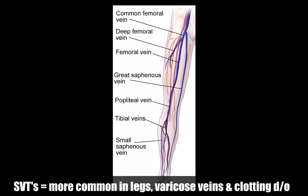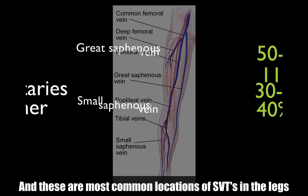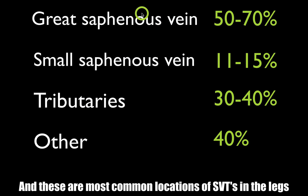SVTs are more common in the lower extremities and more common in patients with pre-existing coagulation disorders and varicose veins. The most common location is going to be either the greater saphenous vein or tributaries of the greater saphenous, or the small saphenous vein. Many of these patients will have clots in more than one vein.